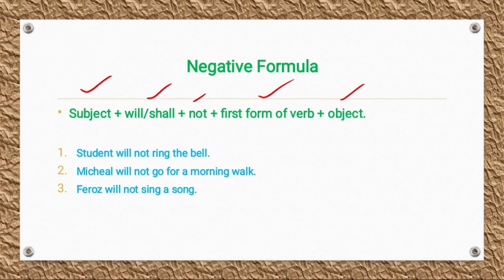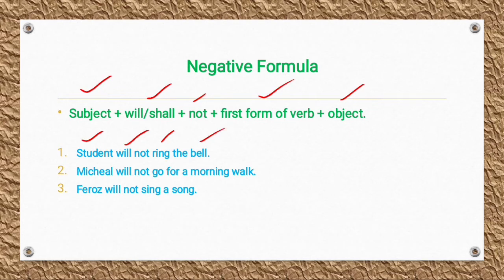The negative formula is: Subject + will/shall + not + first form of the verb + object. For example: 'The student will not ring the bell' — 'student' is the subject, 'will' is the auxiliary verb, 'not' is added for negation, 'ring' is the first form of the verb, 'the bell' is the object. Other examples: 'Michael will not go for a morning walk', 'Feroz will not sing a song.'